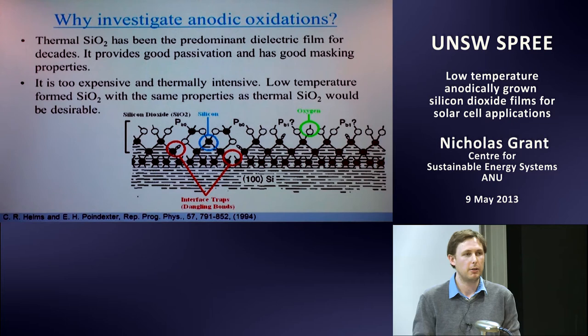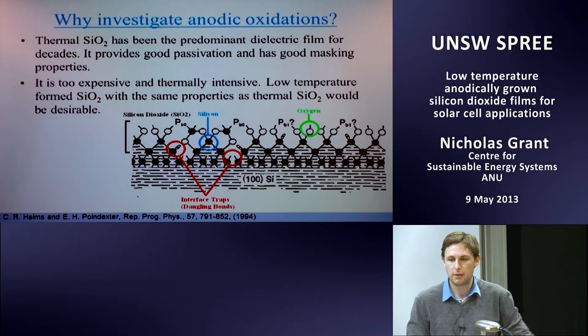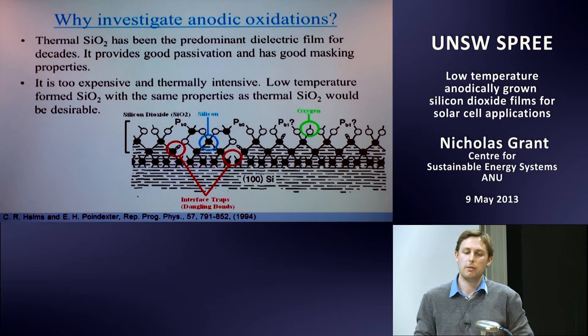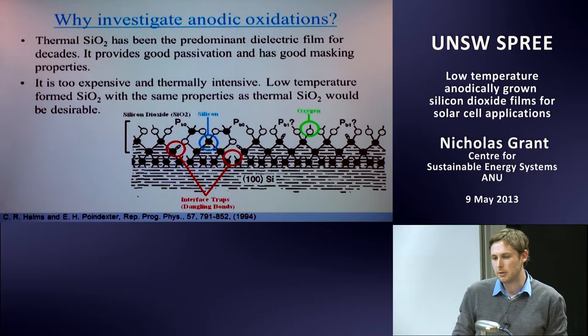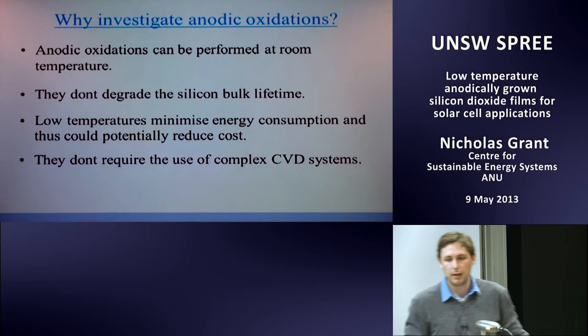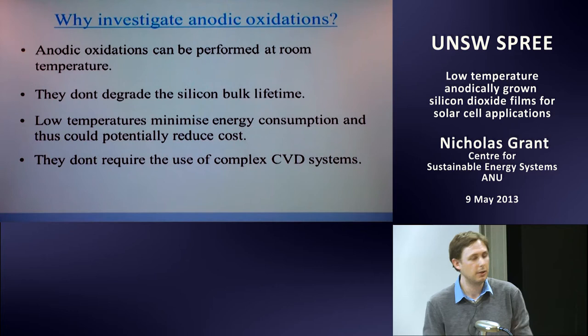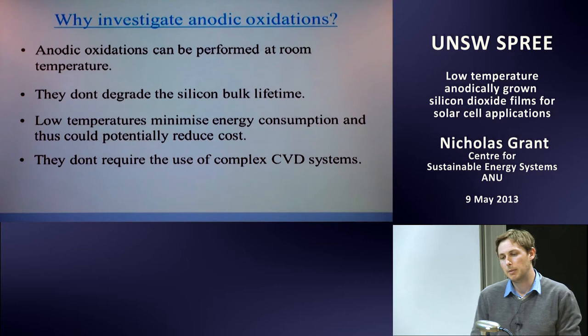So why investigate anodic oxidations? Thermal silicon dioxide has been the predominant dielectric film for decades — it passivates n-type and p-type silicon wafers and provides good masking against dopants and chemical etching. But it's too expensive and thermally intensive. Can we grow a silicon dioxide with the same properties but at a much lower temperature? Anodic oxidation fits this: films can be grown at room temperature, they don't degrade the silicon bulk lifetime, they minimize energy consumption and reduce cost, and they don't require complex chemical vapor deposition.